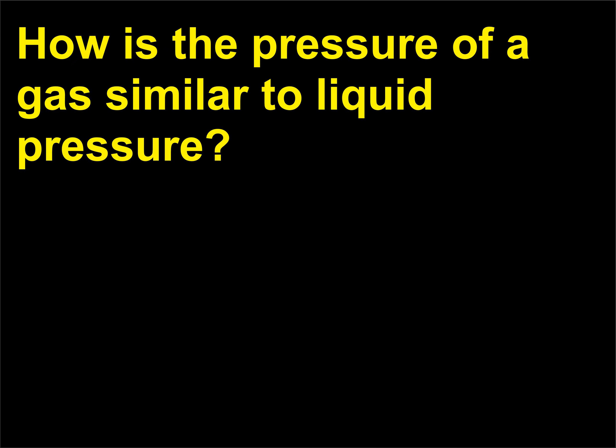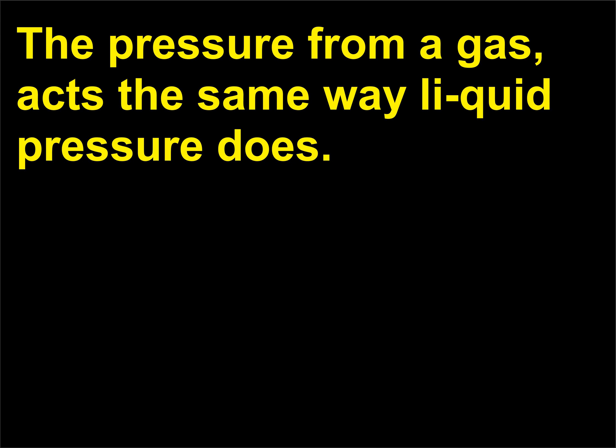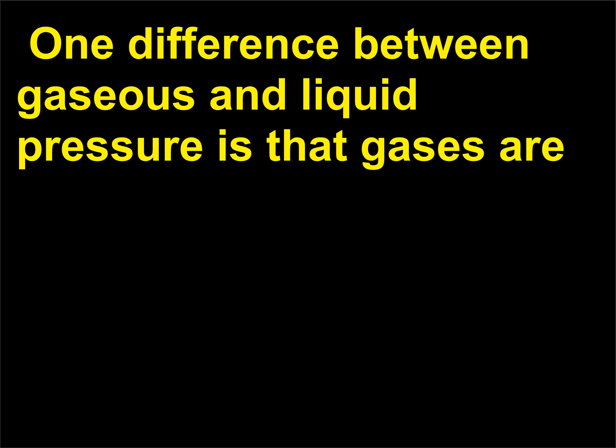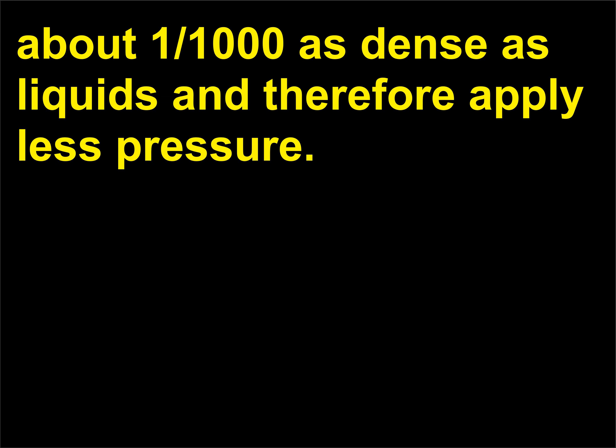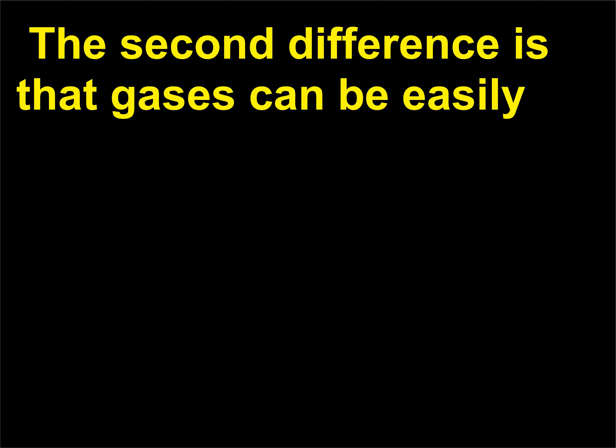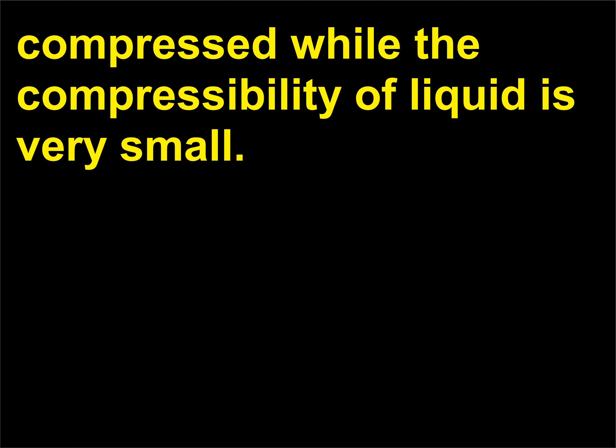How is the pressure of a gas similar to liquid pressure? The pressure from a gas acts the same way liquid pressure does. One difference is that gases are about 1/1000 as dense as liquids and therefore apply less pressure. The second difference is that gases can be easily compressed, while the compressibility of liquids is very small.